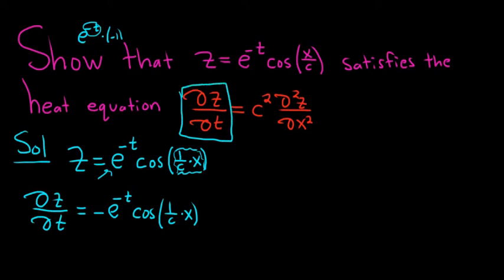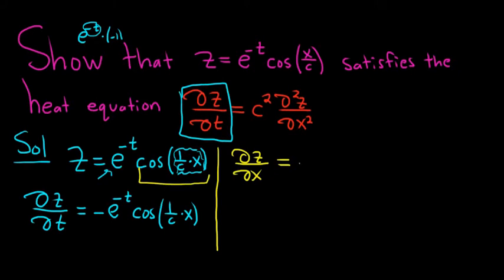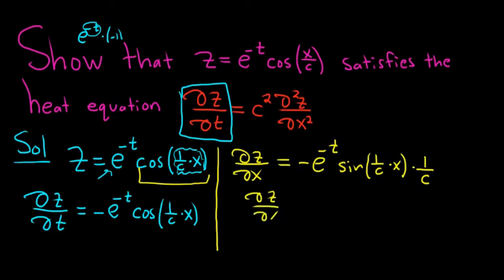Now we have to take the derivative of z with respect to x — del z, del x. When we take this derivative, all of the t's are constants, so e to the negative t is treated as a constant. We take the derivative of cosine, which is negative sine, putting the negative with the e to the negative t. Then sine of 1 over c times x, times the derivative of the inside function. The derivative of 1 over c times x is 1 over c. So del z, del x equals negative 1 over c times e to the negative t sine of 1 over c times x.